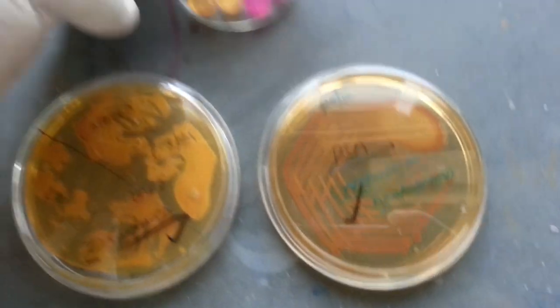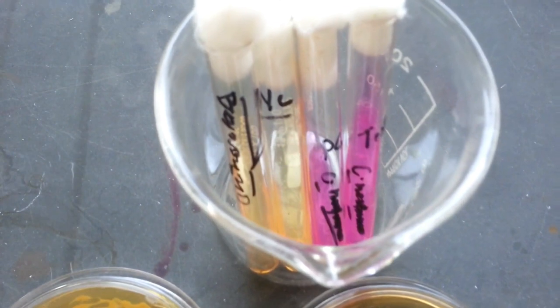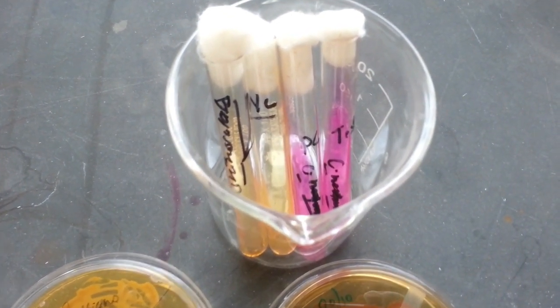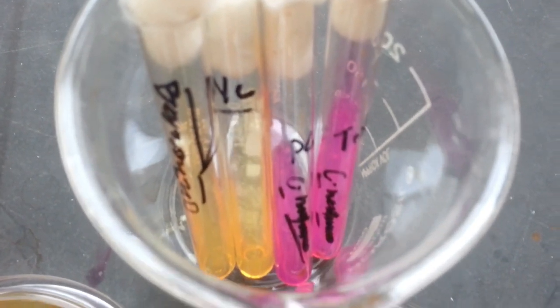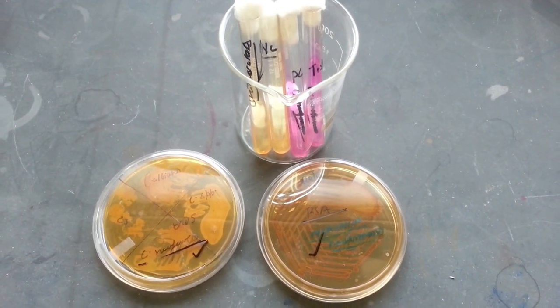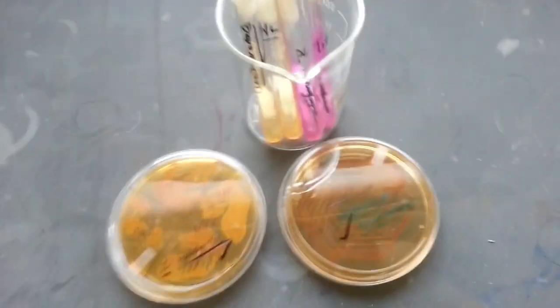Latex agglutination test: Cryptococcus capsular polysaccharide antigen can be detected in CSF, serum, or urine by latex agglutination test.